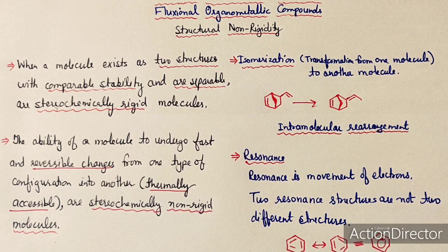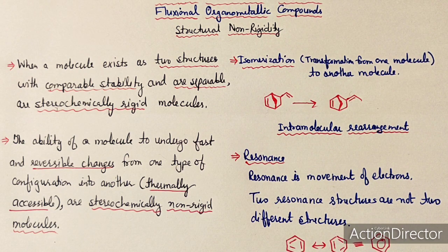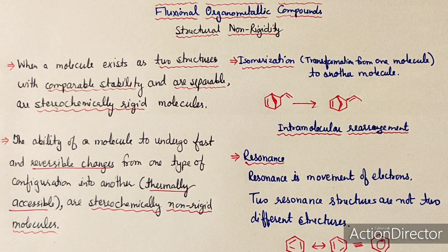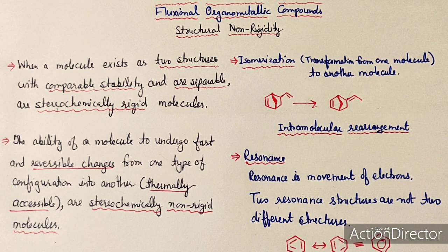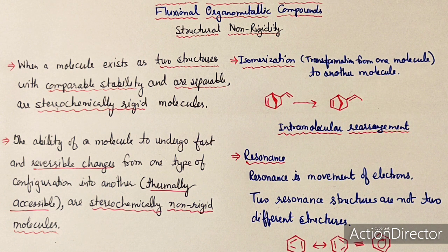Today the topic of our lecture is fluxional organometallic compounds. These fluxional organometallic compounds are also known as non-rigid compounds. The phenomenon is also known as structural non-rigidity or stereochemical non-rigidity.